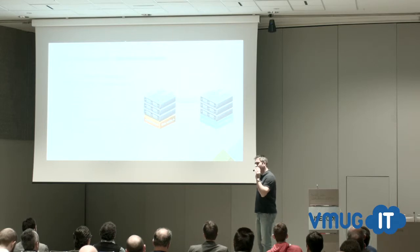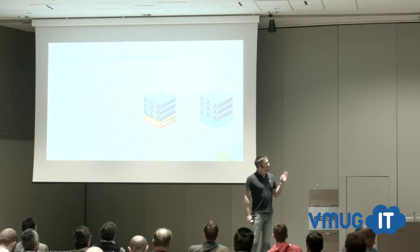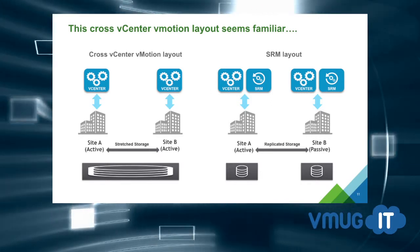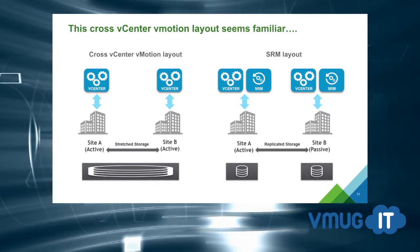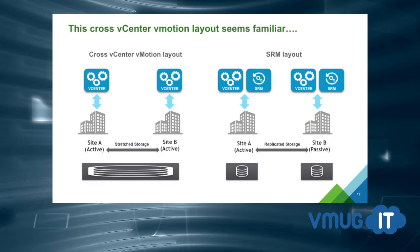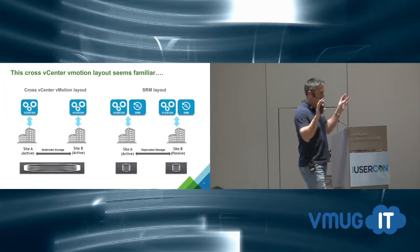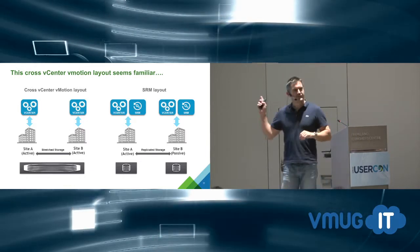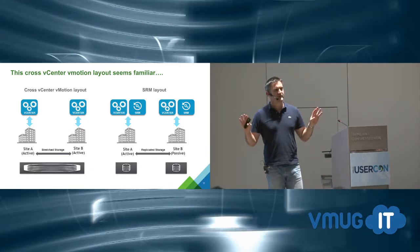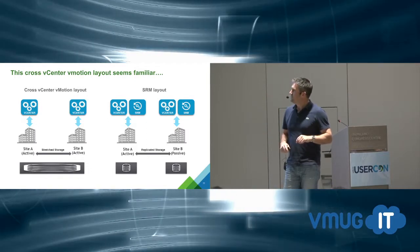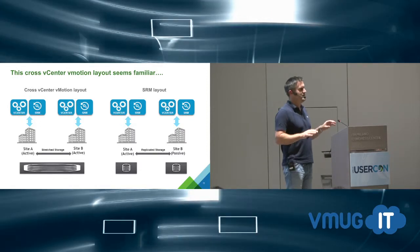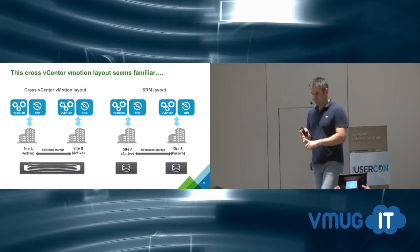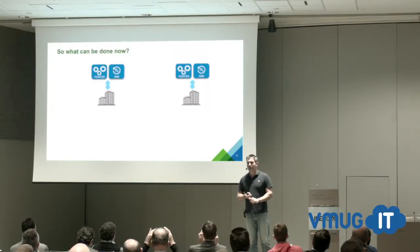You need vSphere 6 for this — vCenter 6 and ESXi 6. With those in place and the appropriate networking you can now vMotion from VC to VC with no restriction. This means the two architectures now look very similar: the cross-vCenter vMotion layout works with two VCs in version 6, with Platform Services Controllers and enhanced link mode. It looks very similar to the SRM design — two VCs, two sites — the only thing missing is the SRM servers.